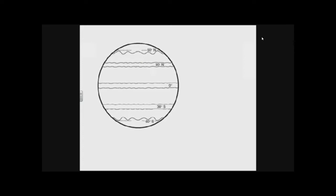This sets up certain wind belts or patterns of wind on the earth. At zero degrees — the equator — and surrounding latitudes, the wind moves towards the equator, which tends to be a lower pressure area. As the wind moves towards the equator it curves to the right, so between 30 degrees north and the equator, the wind tends to move in that curved direction. In the southern hemisphere the same thing happens, but the curve is to the left instead.